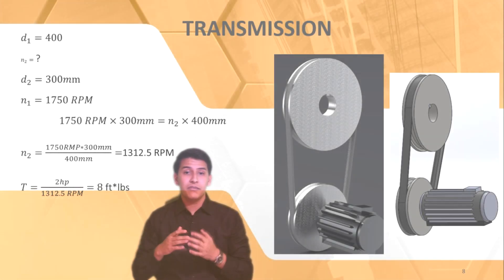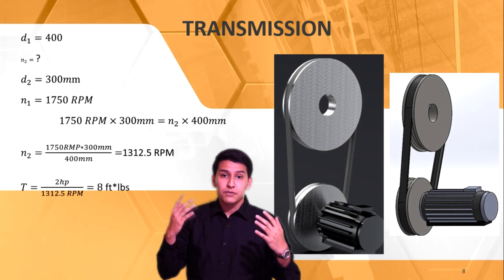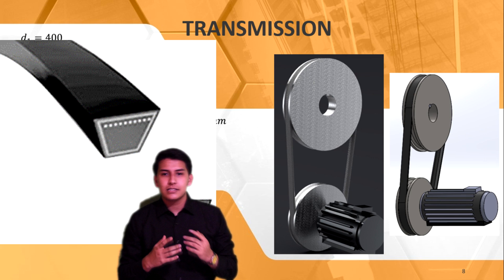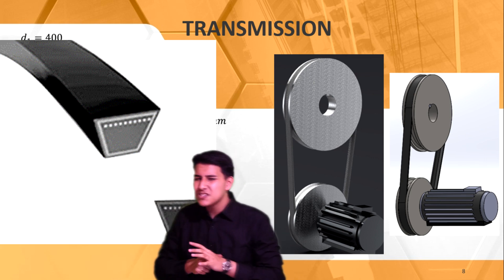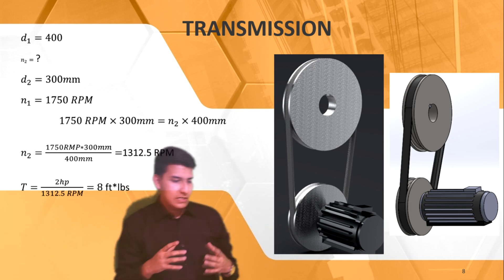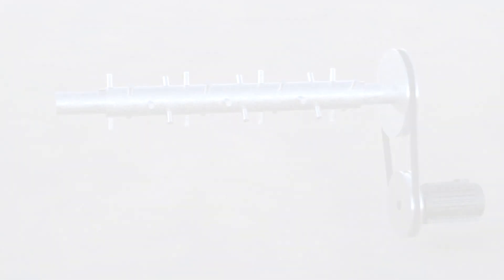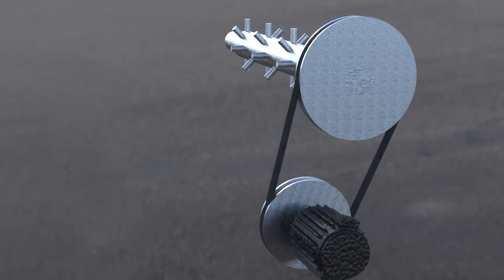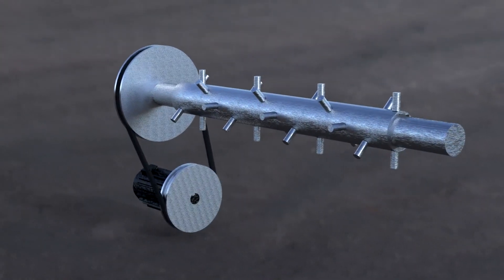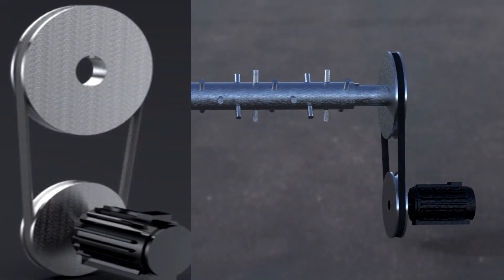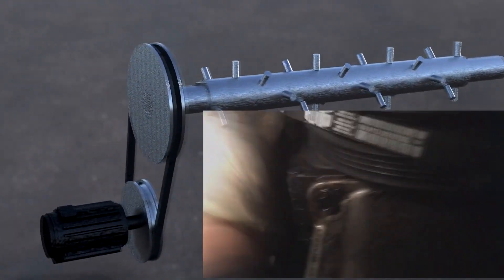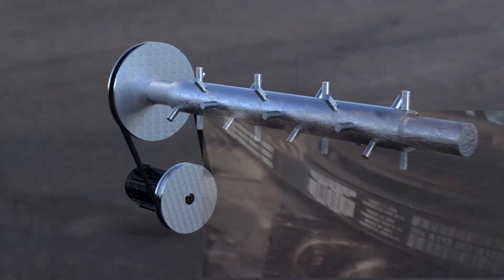Why will we use this type of transmission? It is simple — because of the ease that the worker can have at the moment of using it, since the only maintenance required is to change the belt. This change must be done every year due to the climatic conditions the machine is subjected to. Another important reason we selected this type of transmission is because it has a quieter operation than a chain or gear transmission, allows power to be transmitted over a relatively long distance economically, is easily detachable and attachable, and can reach high speeds compared to chains.